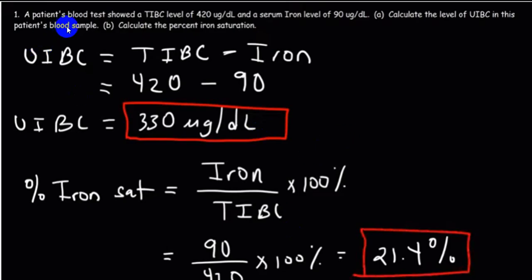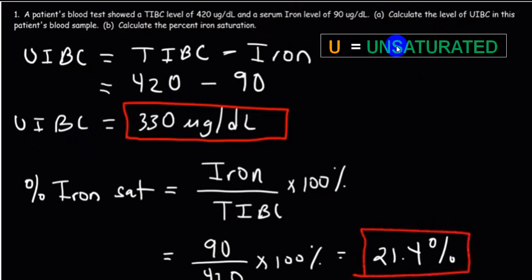Here is a calculation example: a patient has TIBC of 420 and iron level of 90. UIBC = TIBC minus iron = 420 minus 90 = 330. Usually we don't utilize UIBC at all. Unsaturated iron binding capacity is just the opposite of TIBC. To calculate transferrin saturation: iron divided by TIBC multiplied by 100 = 90/420 × 100 ≈ 21%, which is reduced — indicating reduction in iron level in blood, i.e., iron saturation is reduced.